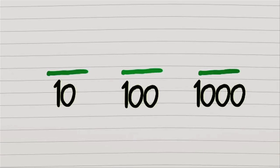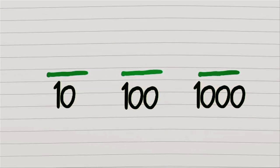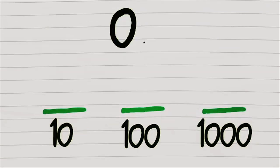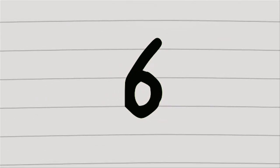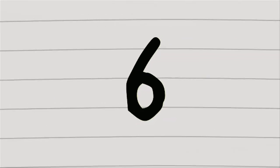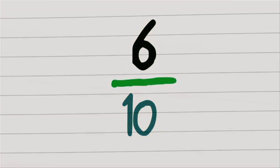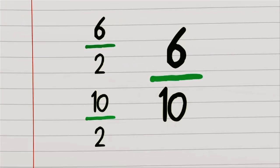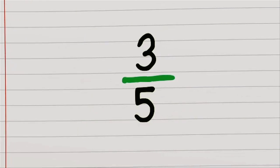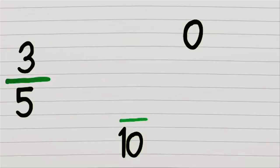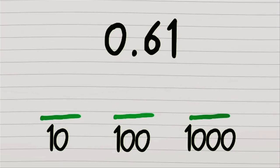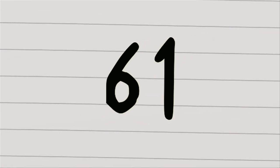Now to go from decimals to fractions, put the number over tens, hundreds, or thousands. Say for instance we took 0.6 — ignore the decimal and leave the number, that's it. If you're only left with one number at the end, you're gonna have to divide the number by ten. The top and bottom may be divisible by the same thing, so like here we use two to finish up with three fifths.